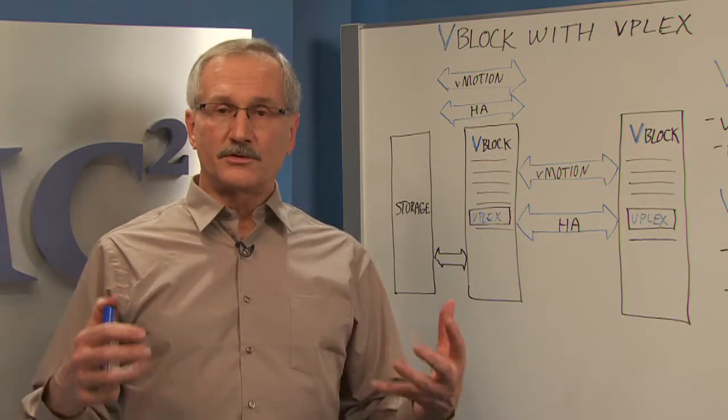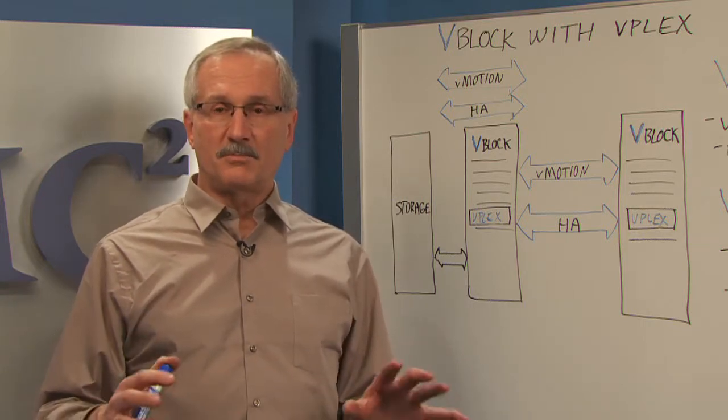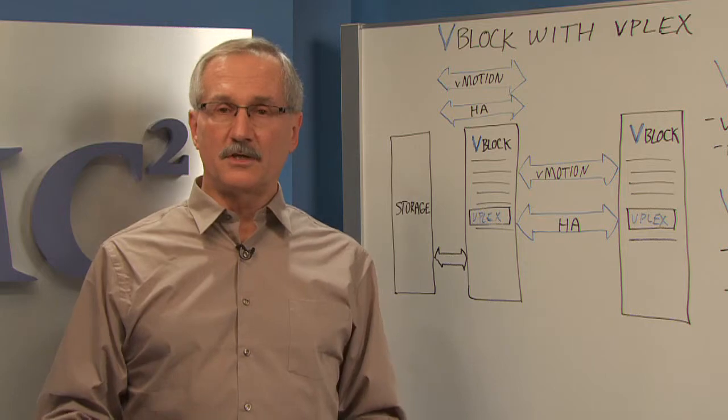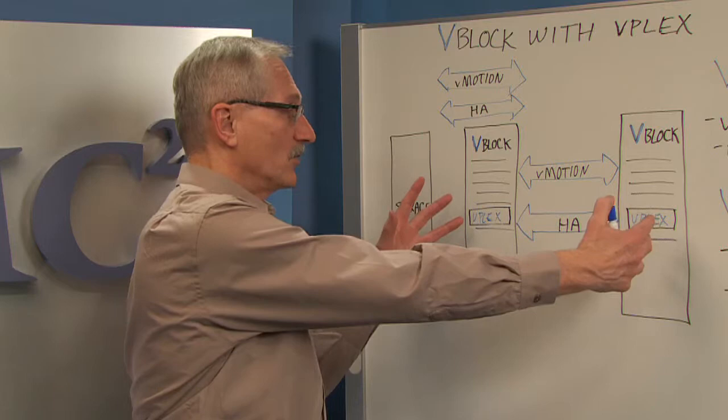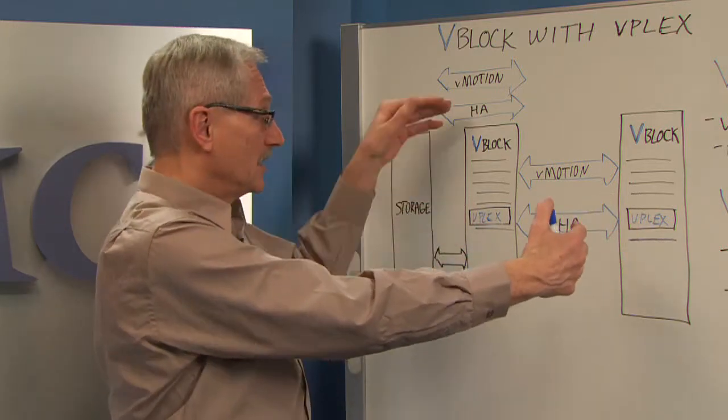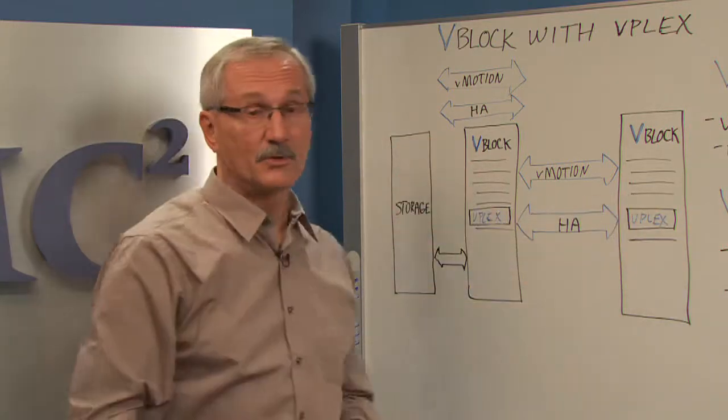So all the data that's written by servers to storage is written in one location and also the other. So vPlex basically is, in effect, stretching VMware across this distance. So any writes to data go across both sites.